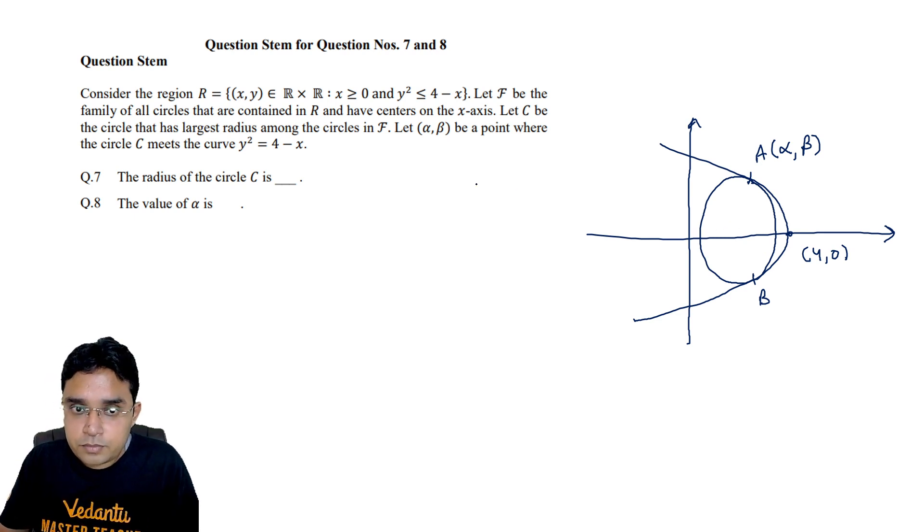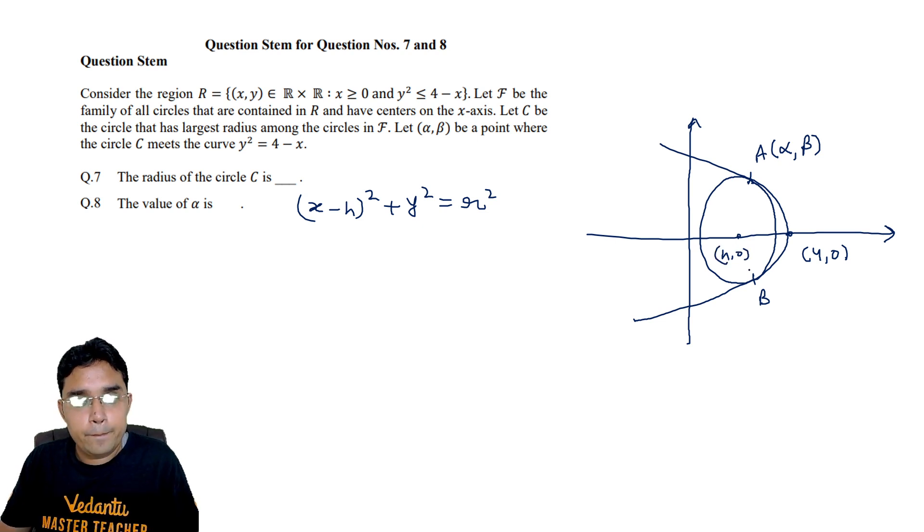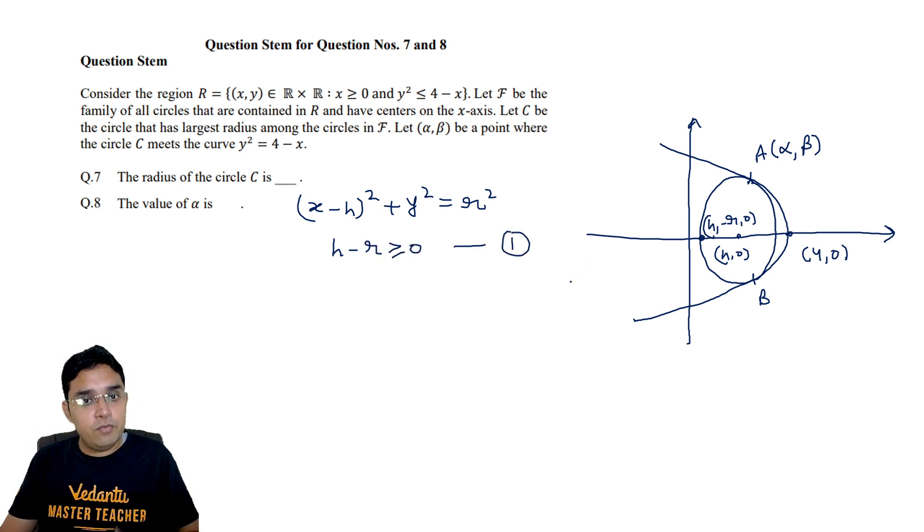Now I will start this question by taking equation of circle to be (x minus h) whole square plus y square is equal to r square. Its center is (h,0) and radius is r. Now this point here will be (h minus r, 0). So we have to make sure that h minus r should be greater than or equal to 0. So let us call this as equation number 1.